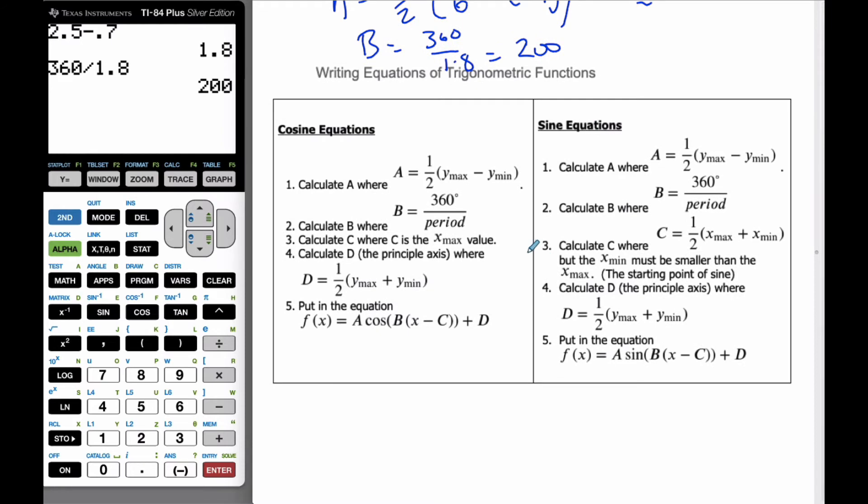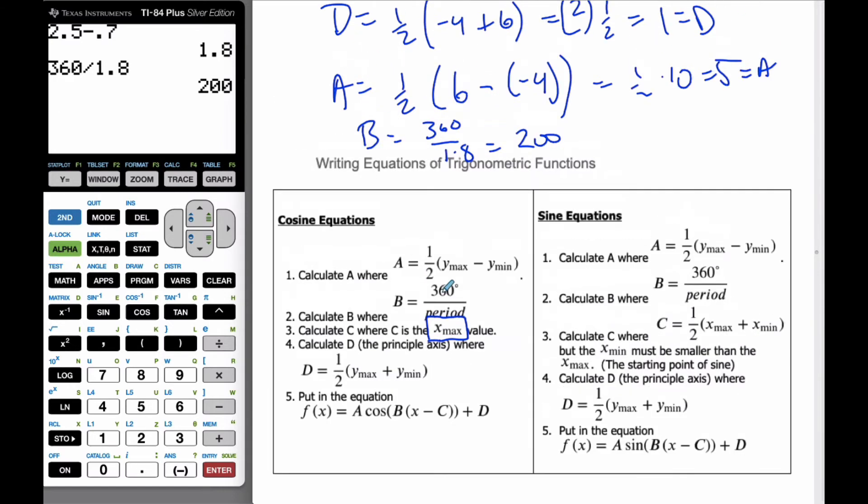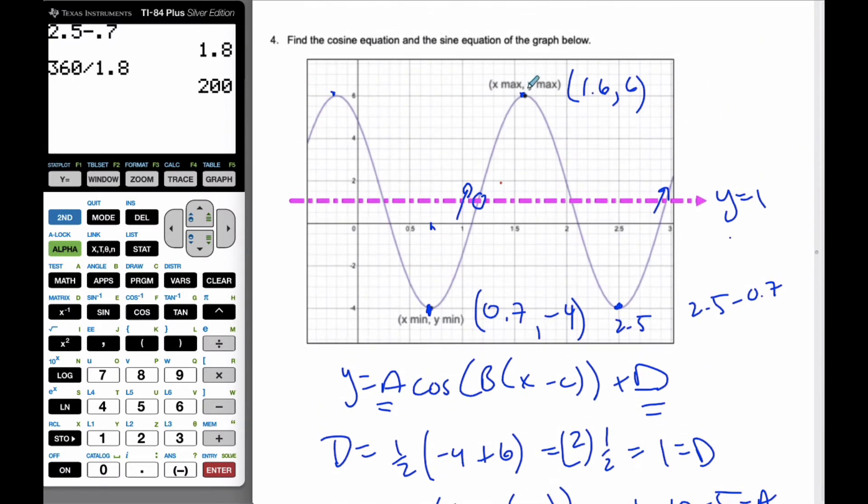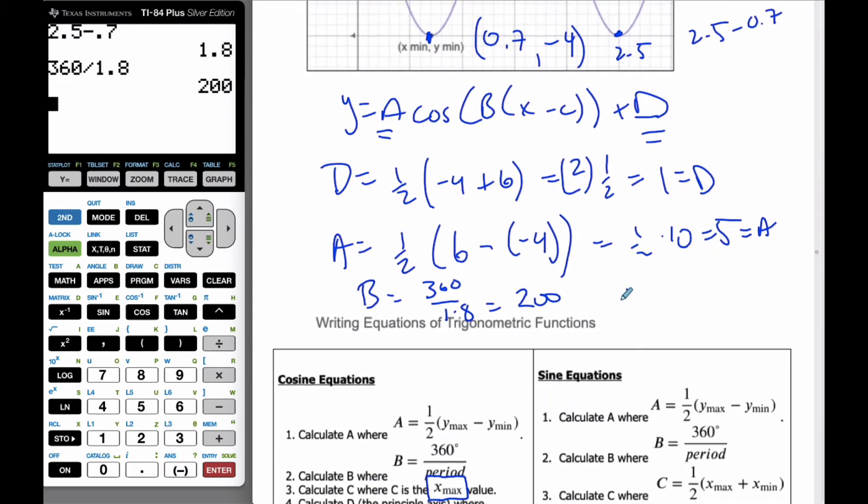And then finally, my c value is the x max value. So for cosine, it's the x max value, so my c value is going to be 1.6. So c is equal to 1.6. And so if I put it all together now, if I put it all together,